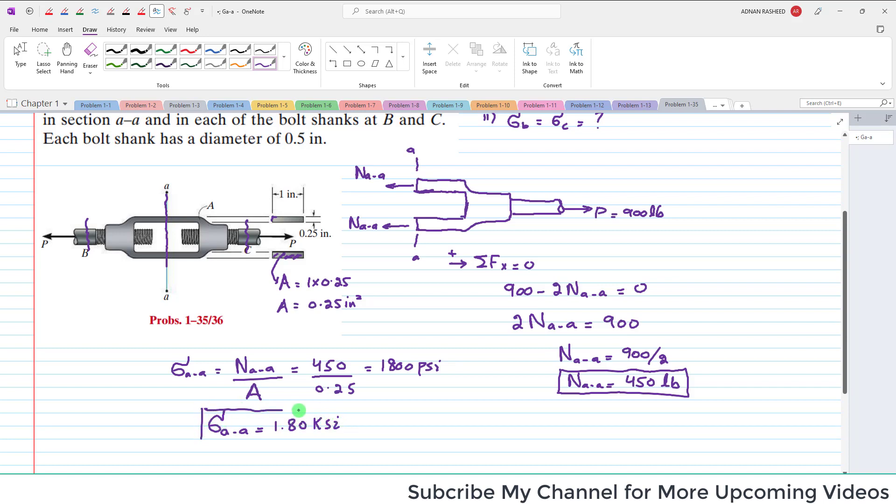So the first part, we have calculated the value of sigma A-A. Now we will find the stress at point B, which is the bolt shank. For that we have to cut this bolt over here, so I will draw.